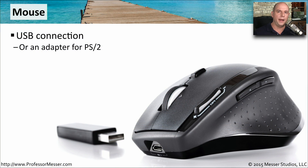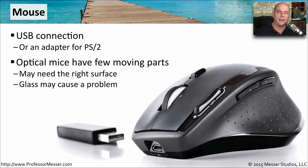A mouse is a very common way to get information into a computer. These are often connected via USB or through a wireless link to a USB interface. Sometimes you may need an adapter to go from USB to PS2. Most mice these days have no moving parts — they're an optical mouse that uses light. For that reason, using these mice on a glass table might be a problem, although there are some optical mice specifically designed to be used on glass.